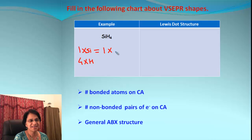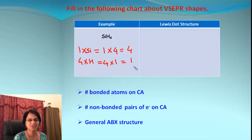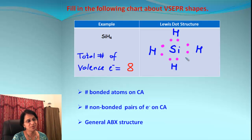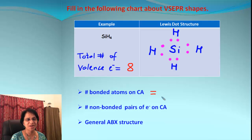Moving on to the next compound: SiH₄. Silicon comes from group 14, giving 4 valence electrons. We have four hydrogen atoms, each bringing one electron, giving four total. Together we have 8 electrons. The Lewis dot structure shows silicon as the central atom with all four hydrogens around it — a quick electron count gives eight, matching our total.